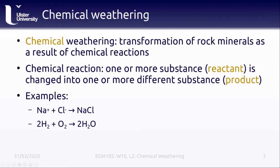Chemical weathering is the process by which rock minerals are transformed into other substances via chemical reactions. A chemical reaction is a process whereby a substance or substances are transformed into a different substance or substances. The original substance is called the reactant and the resulting substance is called the product.